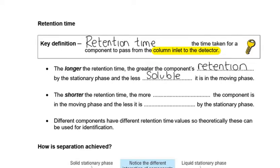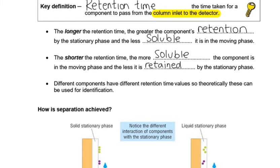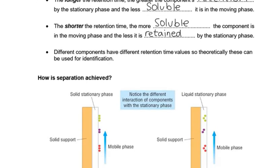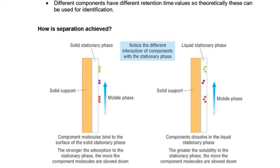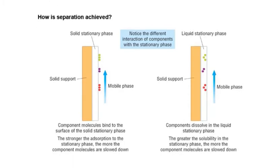The shorter that retention time, the more soluble the component was in the gas moving phase. It went with the moving phase, and the less it is retained by that stationary phase. Whether the stationary phase is solid or liquid, it is retained in some way. And different components will have different retention values, so we could use them for identification. So let's just have a little think about how it would be different if it was a solid versus a liquid. Remember that although this diagram is drawn upwards, ours would be moving through a spiral column, so it would be spiraling around.